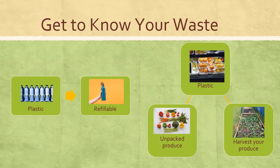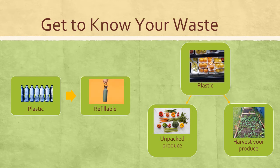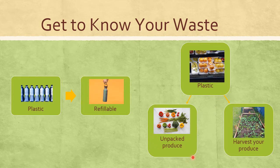A waste audit can help us determine possible behavior changes. We can identify what we can reduce and which items we can reuse. For instance, you may notice that you are consuming too many bottles of water — you can change this by using a refillable bottle. Or if you are consuming too many vegetables or fruit wrapped in plastic, you may consider buying unwrapped produce, which is more environmentally friendly, or even better, you can harvest your own produce. By knowing our waste, we know what we can change.